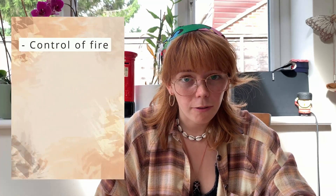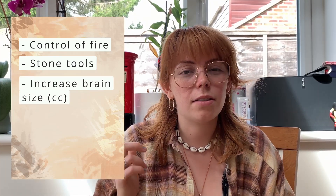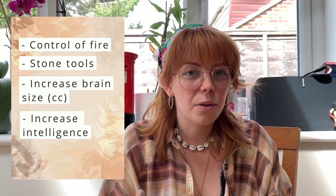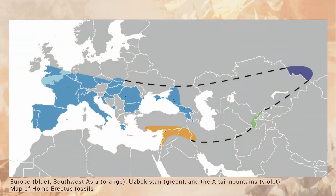Around two to three million years ago we start to see hominins use control of fire and create stone tools. They had an increase in brain size resulting in an increase of intelligence, and they also had plants and animals in their diets. 1.7 million years ago we see the first evidence of the expansion of Homo into the rest of the world. Homo ergaster, when it left Africa, is now known as Homo erectus. This group of hominins spread all the way to Asia.